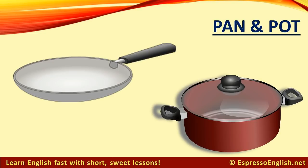Pan. A pan is often used for frying food — cooking it in oil. Pot. A pot is often used for boiling food — cooking it in water. The top part of the pot is called a lid or cover. It can be made of metal or glass.